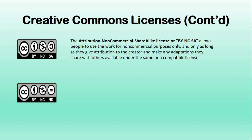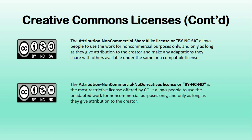The attribution non-commercial share-alike license, or BY-NC-SA, allows people to use the work for non-commercial purposes only, and only as long as they give attribution to the creator and make any adaptations they share with others available under the same or compatible license. And finally, the attribution non-commercial no derivatives license, or BY-NC-ND, is the most restrictive license offered by CC. It allows people to use the unadapted work for non-commercial purposes only, and only as long as they give attribution to the creator.